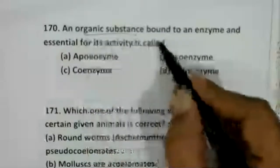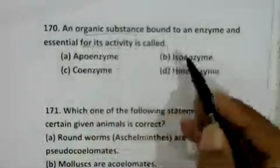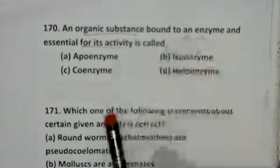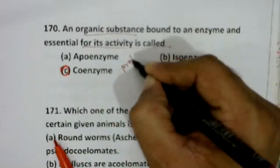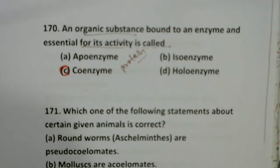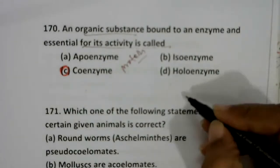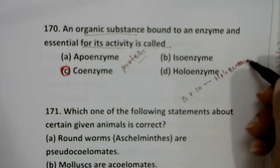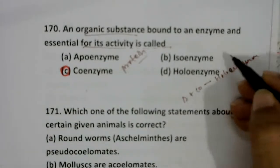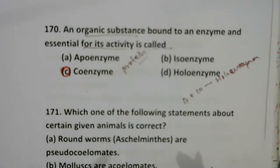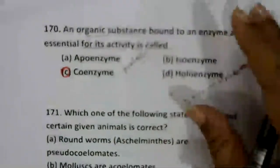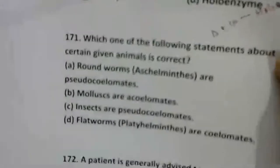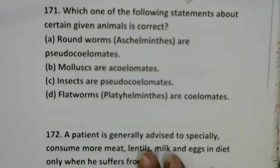An organic substance bound to an enzyme and essential for its activity is called a coenzyme. Apoenzyme is only the protein part of an enzyme. A coenzyme or cofactor is an organic substance that binds to the enzyme forming the holoenzyme: apoenzyme plus coenzyme equals holoenzyme. Isozymes are enzymes that do not take part in formation of holoenzyme.